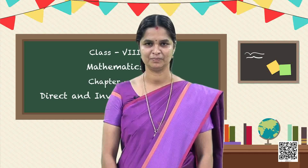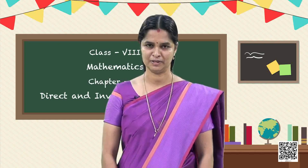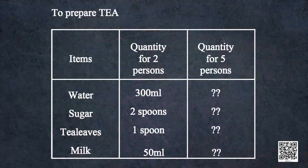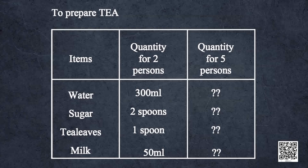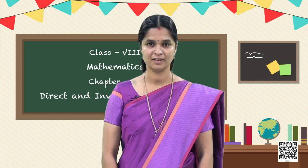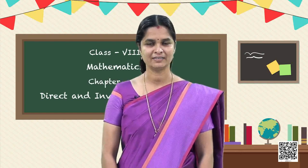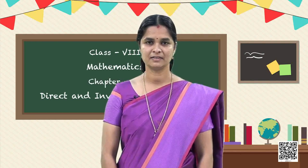Mohan has some guests at home and he wants to prepare tea for them. They are five in number. Mohan knows how to prepare tea for two persons. These are the quantities of various items needed to make tea for two persons: 300 ml of water, two spoons of sugar, one spoon of tea leaves and 50 ml of milk. Can he take the same quantities to prepare tea for five persons? Of course not.